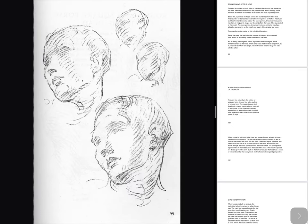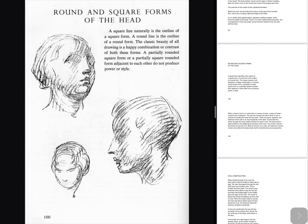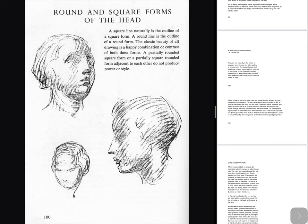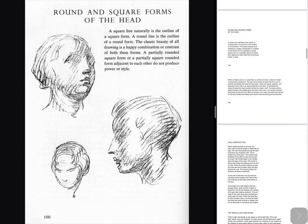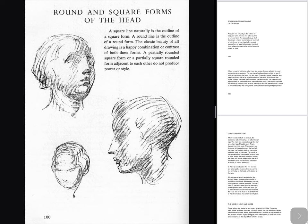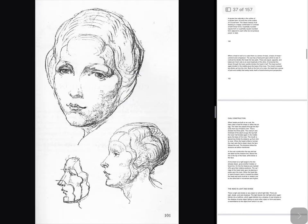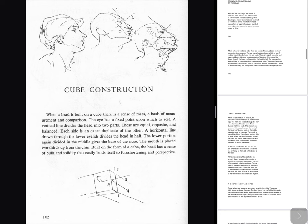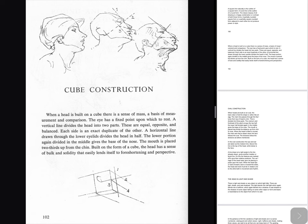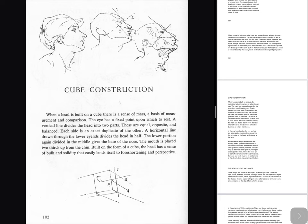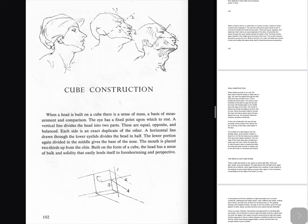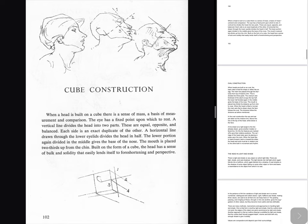Round and square forms of the head: A square line naturally is the outline of a square form; a round line is the outline of a round form. The classic beauty of all drawing is a happy combination or contrast of both these forms. When a head is built on a cube, there is a sense of mass, a basis of measurement and comparison. The eye has a fixed point upon which to rest. A vertical line divides the head into two equal, opposite and balanced parts — each side is an exact duplicate of the other. A horizontal line drawn through the lower eyelids divides the head in half. The lower portion again divided in the middle gives the base of the nose. The mouth is placed two-thirds up from the chin. Built on the form of a cube, the head has a sense of bulk and solidity that easily lends itself to foreshortening and perspective.